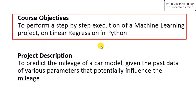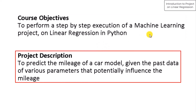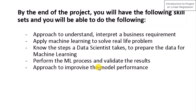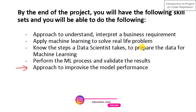The objective of this discussion is to execute a machine learning project on linear regression to solve a real-life problem. We shall predict the mileage of a car model using historical data. By the end of this project, you will have learned how to understand and interpret a business requirement, apply machine learning to solve real-life problems, know how to prepare the data, perform the machine learning process and validate the results, and approach to improvise the model performance.